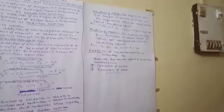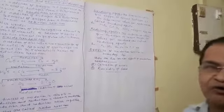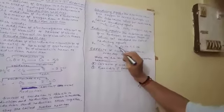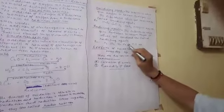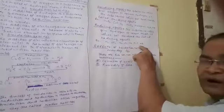Reducing agents are substances which give hydrogen or remove oxygen — that is, which get oxidized themselves — and are called reducing agents. Examples include hydrogen, sulfur dioxide, highly electropositive metals like zinc, iron, and sodium, and nonmetals like carbon and sulfur, etc.